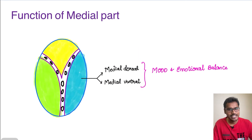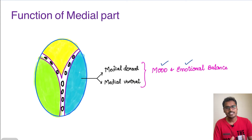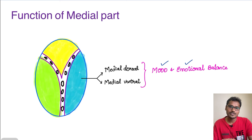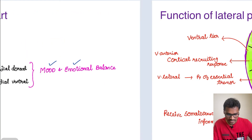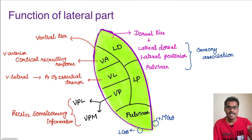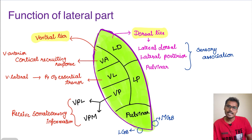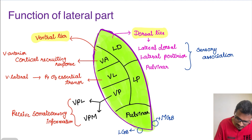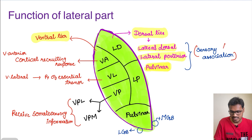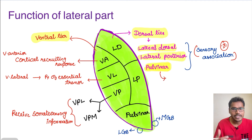Coming to the medial part: medial dorsal and medial ventral nuclei are both involved in higher functions like mood and emotional balance — they help create emotional balance in the individual. Now in the lateral part's dorsal tier, we have lateral dorsal, lateral posterior, and pulvinar. All three dorsal tier nuclei are involved in sensory association. Additionally, the pulvinar is also involved in visual attention.